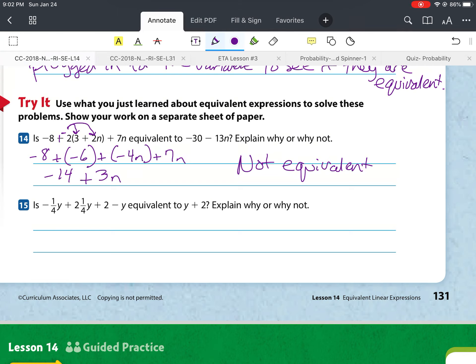Then for number 15, it says, Is negative 1 fourth y plus 2 and 1 fourth y plus 2 minus y equivalent to y plus 2? Explain why or why not. Okay. So for this one, we're going to change subtraction to addition, take the opposite, and start combining. So we know that there's an understood 1 in front of this y, negative 1y. So if we have a negative 1y, we've got a negative fourth y and a negative 1y plus 2 and 1 fourth y plus 2. So that's going to give us negative 1 and 1 fourth plus 2 and 1 fourth. And when we find the difference there, that's going to give us a difference of 1y or just y plus 2 because 2 will be left over. So y plus 2.